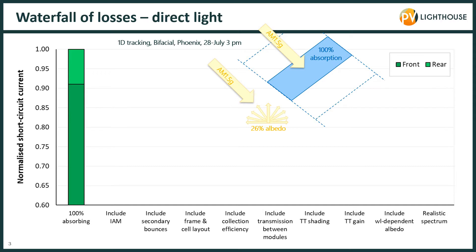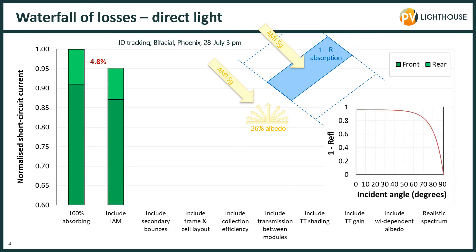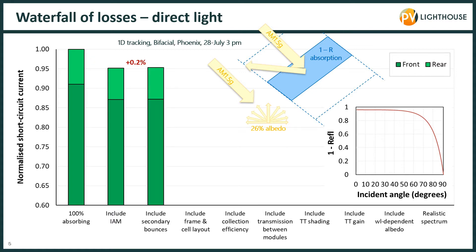If you're anywhere else or it's any other time, the numbers we present won't be exactly representative, but they will give you an idea of the relative importance of these various losses and gains, and also what can be quantified with our SunSolve simulator. In reality, not all photons incident to a module are transmitted into the silicon to generate current. Some fraction will be reflected, depending on the angle of incidence as shown in the graph on the right. When we account for that, the short circuit current is reduced by 4.8%. Some fraction of those reflected rays will land on an adjacent module and thereby increase current — in this case we found that to be 0.2%.